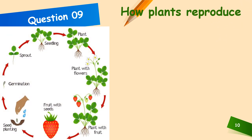First, the seed is planted. Then it germinates, and the seed will finally sprout. The sprouted plant will start as a seedling. The seedling will become a fully grown plant, which will then get flowers. The plant with flowers will then get fruit, and the fruit can be plucked from the plant.